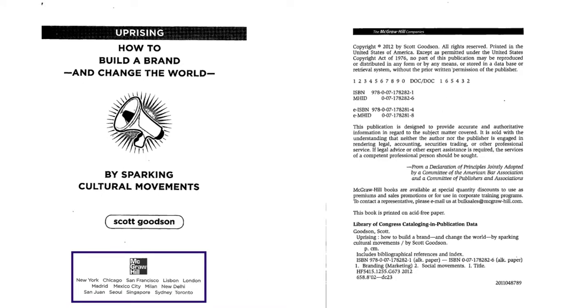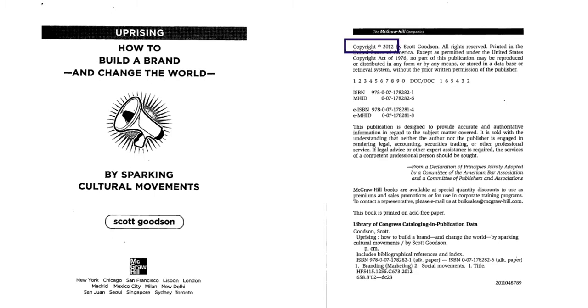We then see a lot of different publishing cities. Generally, if you see more than one, you're just going to take the first one. The only element we're not finding on this page is the date of publication, so what we can do is go to the copyright page and see that it was published in 2012.